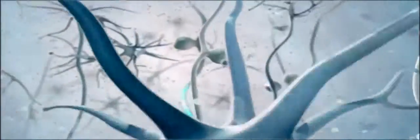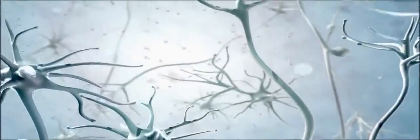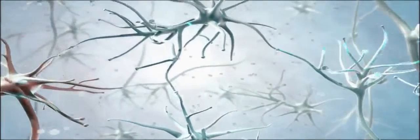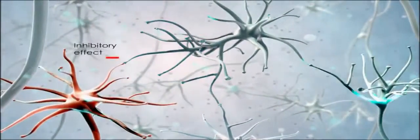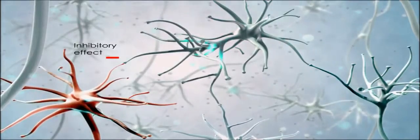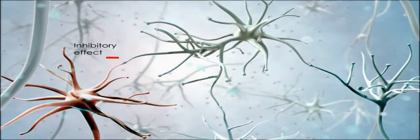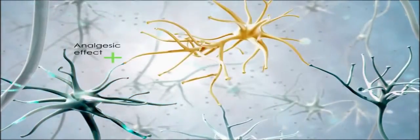Stimulation of the periaqueductal gray is known to produce an analgesic effect. However, this neuroregulatory process is thought to be tonically restricted by inhibitory GABAergic off cells.